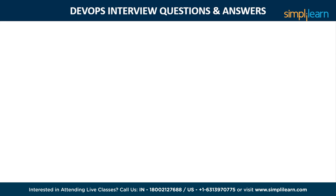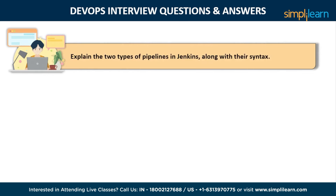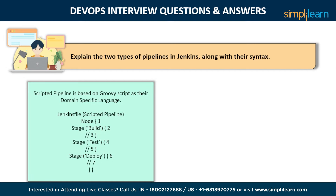The next question is: explain the two types of pipelines in Jenkins along with their syntax. Jenkins provides two ways of developing a pipeline code: scripted and declarative. The scripted pipeline is based on Groovy script as its domain-specific language. One or more node blocks do the core work throughout the entire pipeline. The syntax includes: execute the pipeline or any of its stages on any available agent, define the build stage and perform steps related to the build stage, define the test stage and perform steps related to the test stage, and define the deploy stage and perform steps related to the deploy stage.